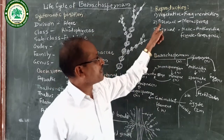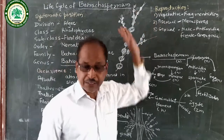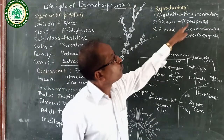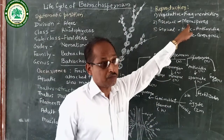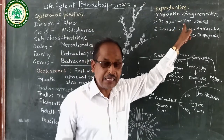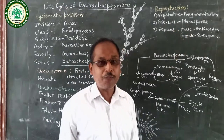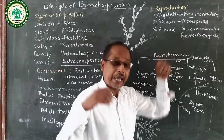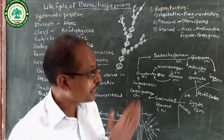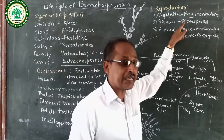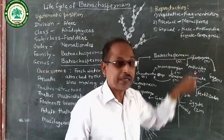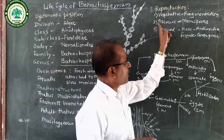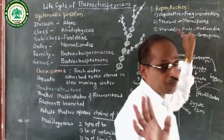The second type is asexual reproduction, which takes place by monospores. These monospores are developed on the Chantransia stage. They are released and separate from the Chantransia stage, and each monospore gives rise to a new individual. This is called asexual reproduction by monospores.